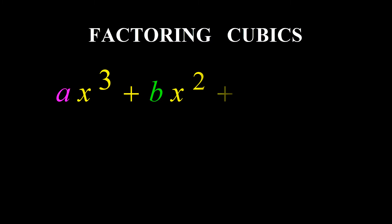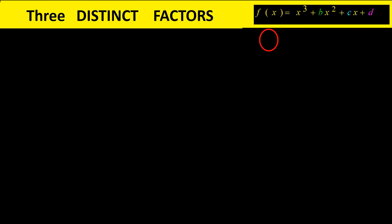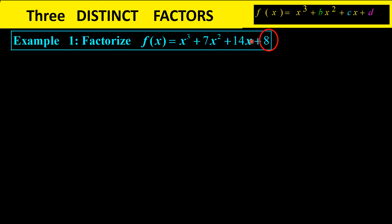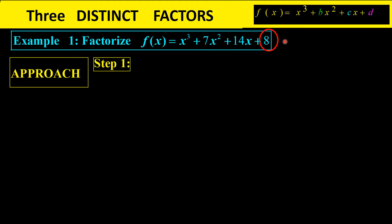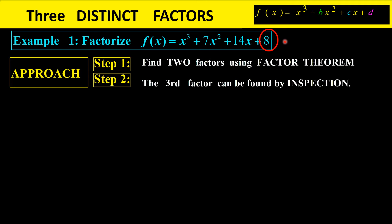Now I'll show you how to factorize cubics of the form ax cubed plus bx squared plus cx plus d using the factor theorem. The cubic will have three distinct factors — three different factors — and we're working with rational factors only. There are two steps: first we find two factors using the factor theorem, and then we find the third factor by means of inspection.